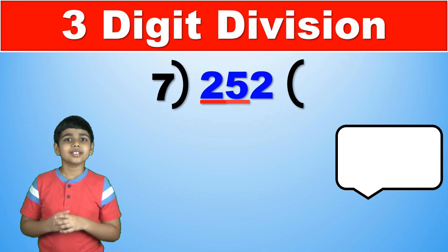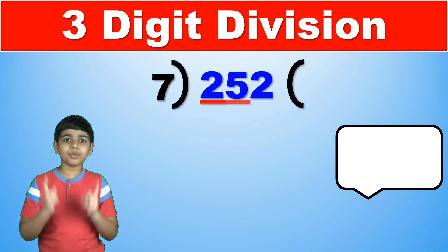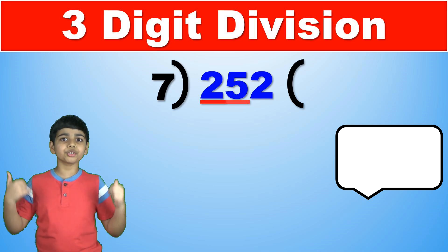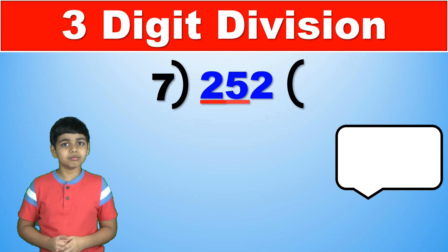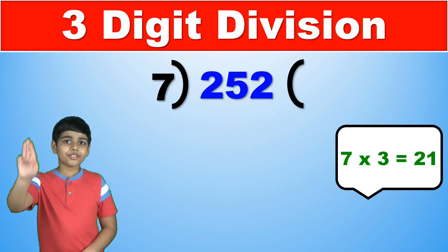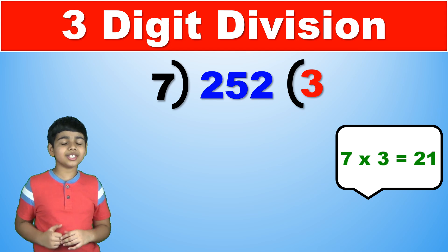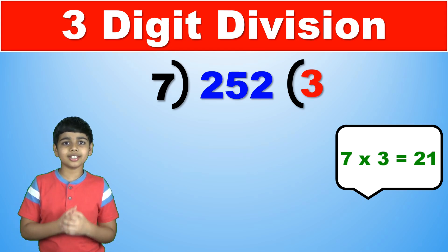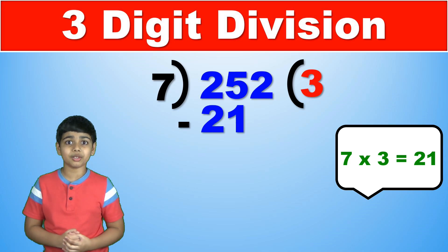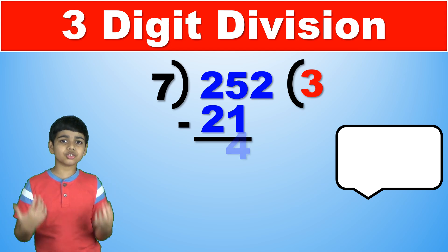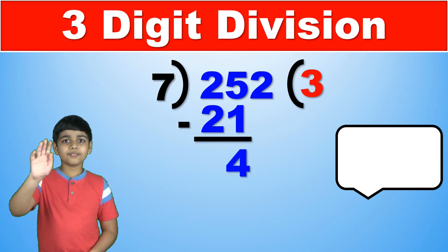So now we find the greatest multiple of 7 which is under 25 and that is 21 which is 7 times 3. Now 3 is the first digit of our answer and 7 times 3 is 21. So we write 21 there. Now 25 minus 21 is 4.